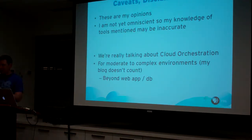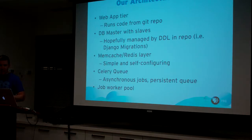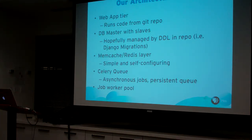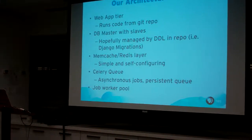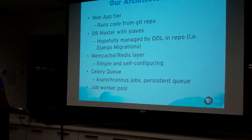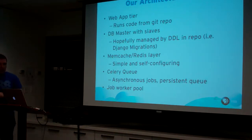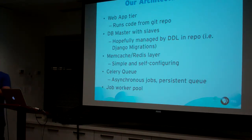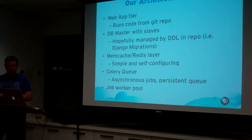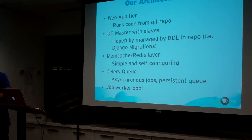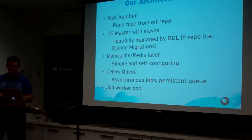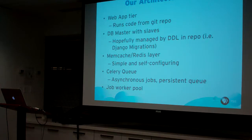Let's pick a moderately complex architecture: we have a web tier, we check out from Git, and it's Python. Then we have a database master with slaves, managing that using DDL tools and migrations. Then we have a memcache or Redis server to speed things up, and some sort of background task queue.